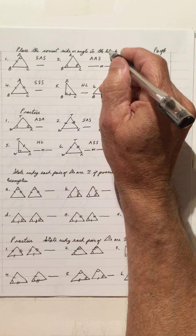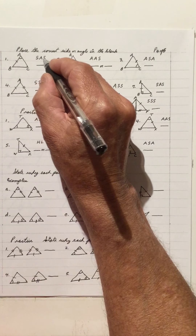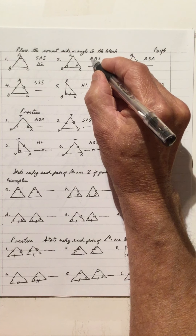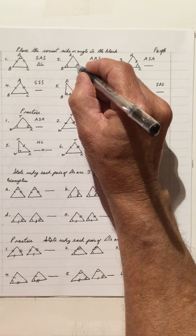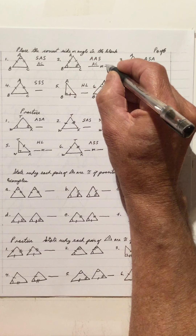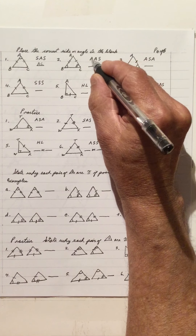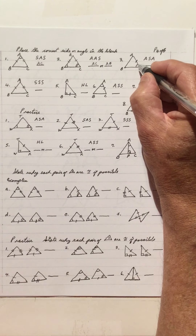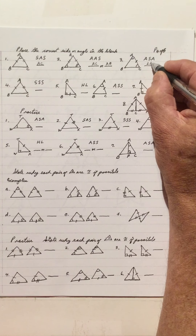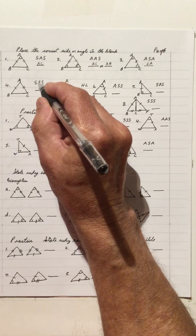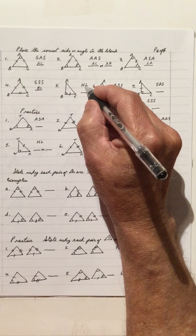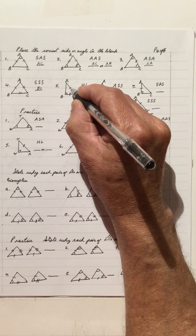Place the correct side or angle in the blank. To make the triangle ASA (angle, side, angle), you need this side — AC. For AAS (angle, angle, side), the side is not included, so you can have AC or the other side — either works to give AAS. For ASA, the side is in between, so angle A must be the answer, giving angle, side, angle. For SSS (three sides), the only option is BC since no angles are involved. For HL (hypotenuse and leg), that's a leg — you need the hypotenuse, which is AC.